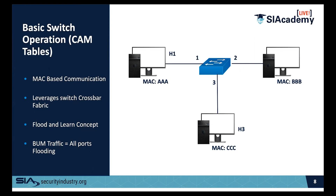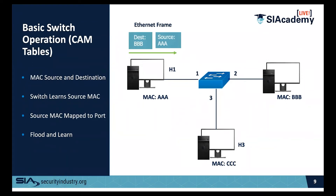Everything on Ethernet switching today is based on something called a flood and learn concept. When sending an Ethernet frame with a destination of MAC address BBB and a source of AAA — in other words, from H1 to H2 — the CAM table that holds all MAC address-to-port mappings initially starts as completely empty. When the first packet is sent out, it executes this flood and learn concept.